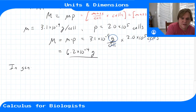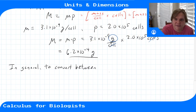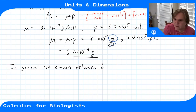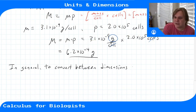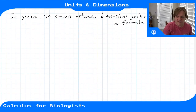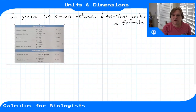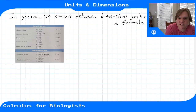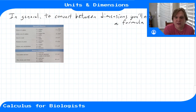In general, to convert between dimensions you need special formulas. These could be formulas like mass equals per-individual mass times number of individuals, or mass equals density times volume, or geometric formulas like the relationship between radius and volume for spheres. The book has a nice list of formulas we'll use often in this class — different geometries, volume of a sphere, surface area of a sphere, area and perimeter of a circle, cubes, squares, and mass relations.